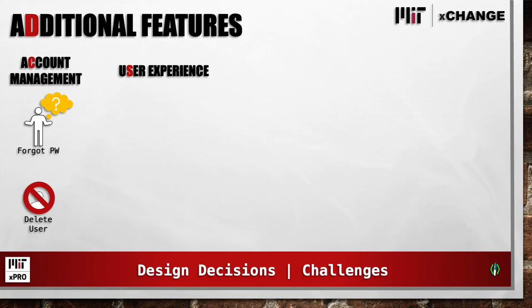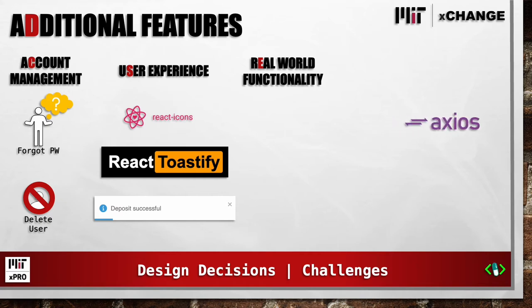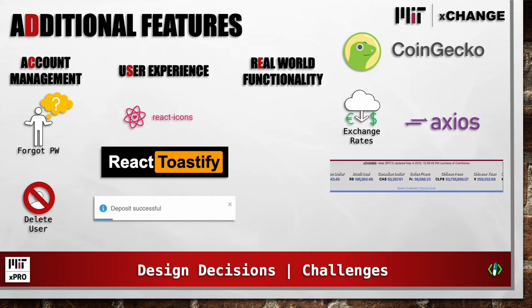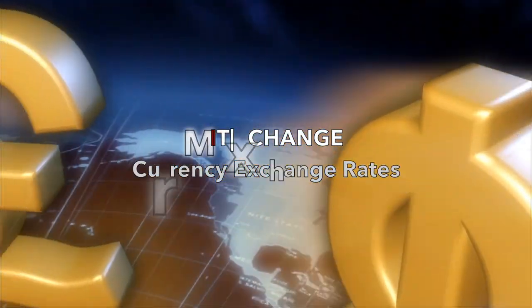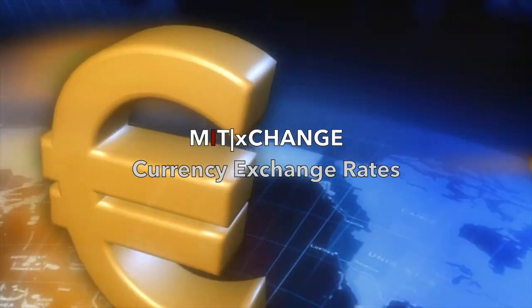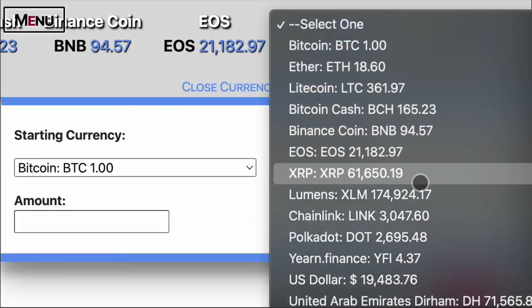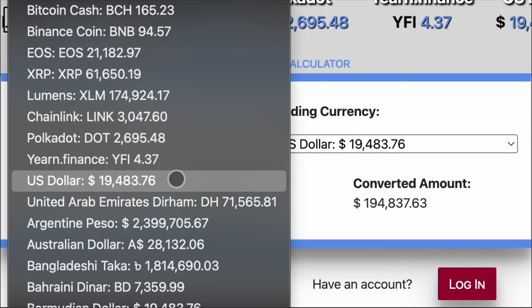For user experience, packages were brought in from React Icons and React Toastify. And for some real-world functionality, we use Axios to pull in exchange rate data from CoinGecko. Challenges include rendering the data into a horizontally scrolling stock ticker, as well as using it for a functional currency calculator. And courtesy of CoinGecko, here is our stock ticker and currency calculator.